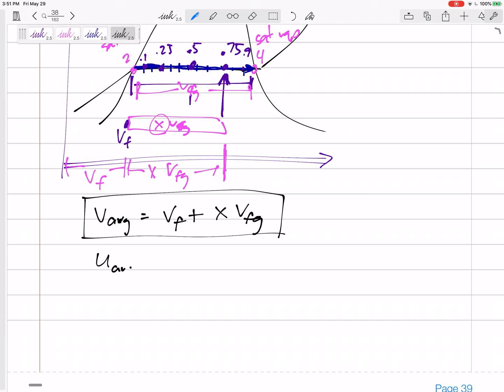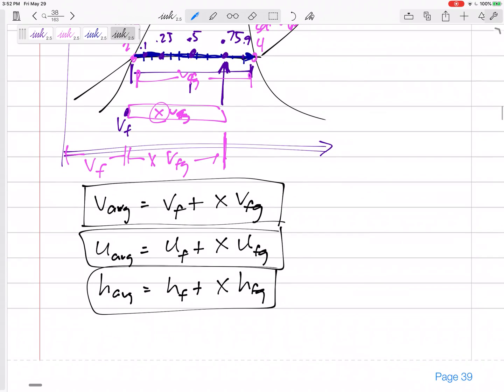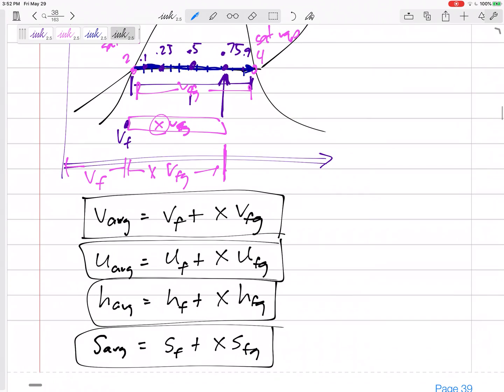So U would be U_F plus X U_FG. H of a mixture would be H_F plus X H_FG. You don't have to write all three of those on your formula sheet. If you write one, then you know that it's the same for all the other properties. S, if we do entropy, S_F plus X S_FG. So let's practice. Let's put that into practice.